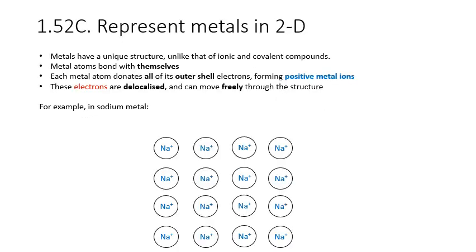First things first, there are three types of bonding structure that you'll do in this GCSE course: metallic bonding, ionic bonding and covalent bonding. Metallic bonding is unique among the three of them. So metal atoms actually bond with themselves. What they do is a metal atom will donate all of its outer shell electrons forming a positive metal ion, and these electrons will become delocalized and can move freely throughout the structure of the metal.